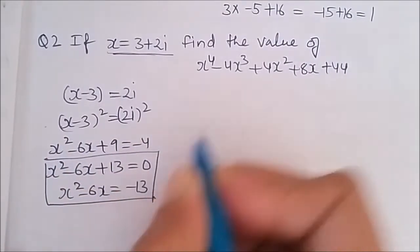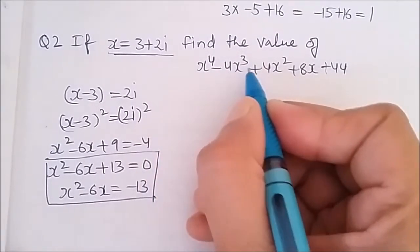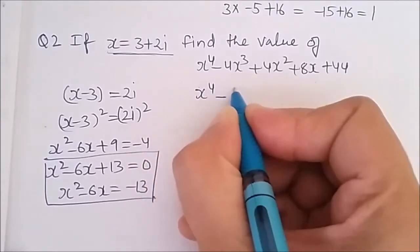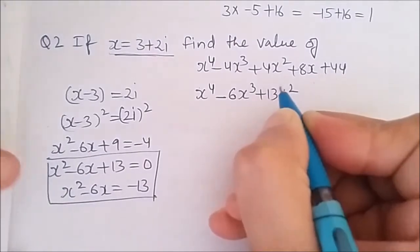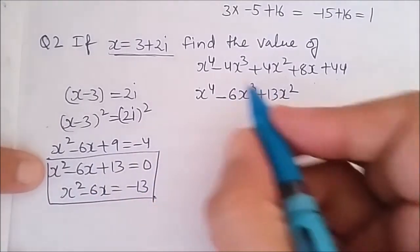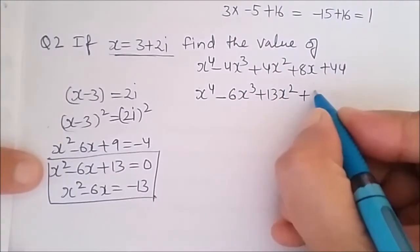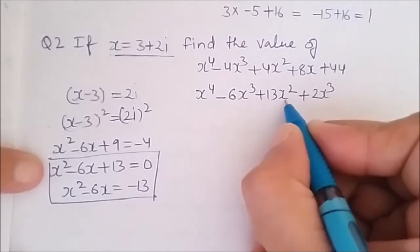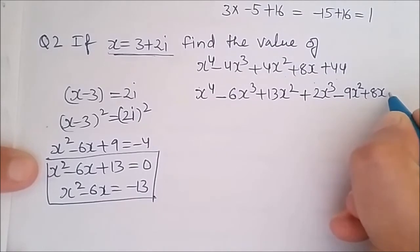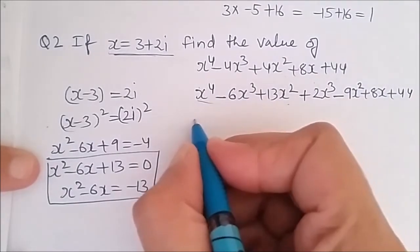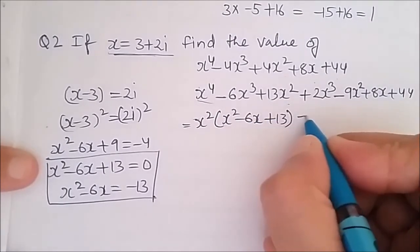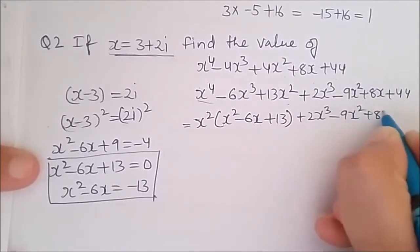I will use these two equations in the polynomial x raised to the power 4 minus 4x cube plus 4x square plus 8x plus 44. x to the power 4 stays. For the next terms I write minus 6x cube plus 13x square — taking x square out of x square minus 6x plus 13 reduces it to this form. To balance I need plus 2x cube, and I write minus 13x square, so to balance I need minus 9x square. Then plus 8x and plus 44 remain. Taking x square common gives x square times (x square minus 6x plus 13) plus (2x cube minus 9x square plus 8x plus 44).